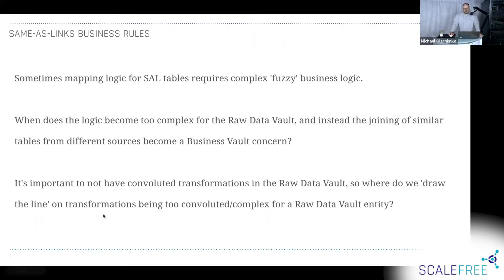For example, joining data from different sources, or having fuzzy matching in the business logic for defining how master records relate to duplicates — essentially how you deduplicate your records. And where do we draw the line of having transformations in the raw data vault versus the business vault? There is a relatively clear red line: in the raw data vault, we have no business logic at all, which means there should be no conditional logic.